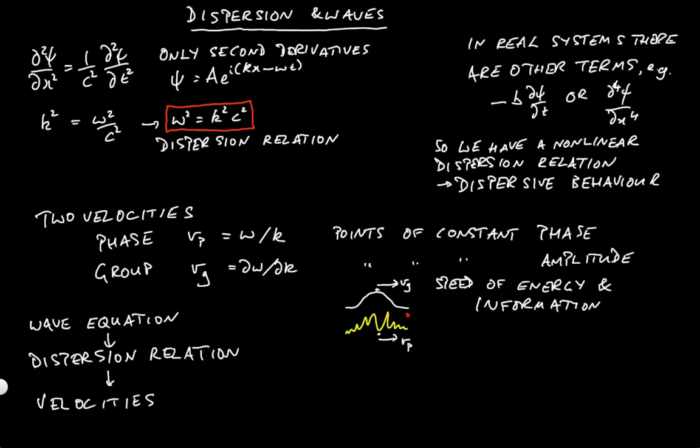You have the two velocities: the phase velocity, which is just ω/k—you might like to remember that by thinking about the form of the phase itself, the phase being kx - ωt, so it should be fairly clear what velocity that moves at—and the group velocity, which is the differential of ω with respect to k. Once you've got those points well memorized and well understood, you should be able to understand the rest of dispersion.